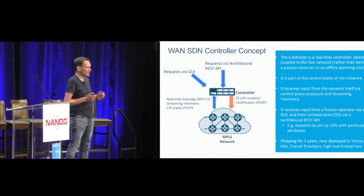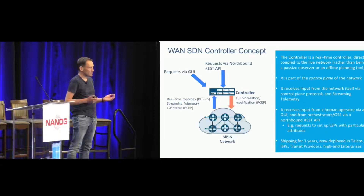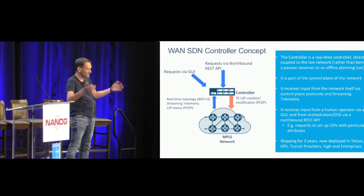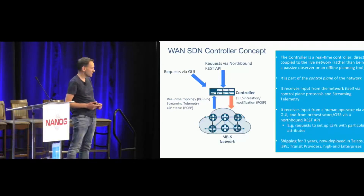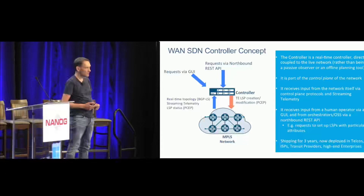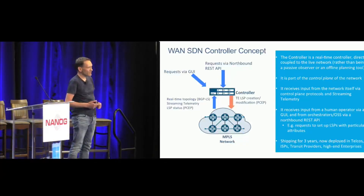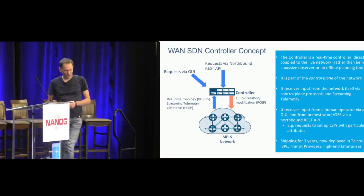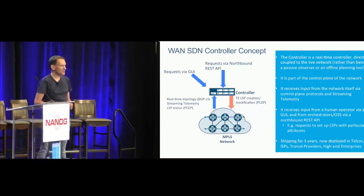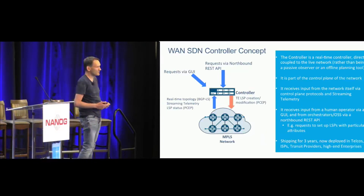First, from the network itself it has visibility of the network topology through BGP-LS. It has streaming telemetry coming in giving it information about what's currently going on in the network, and also LSP status through the PCEP protocol. It also receives inputs from a human operator via a UI and from higher-layer systems via a northbound REST API. On the basis of those inputs it makes decisions about the paths that traffic-engineered LSPs should take across the network.